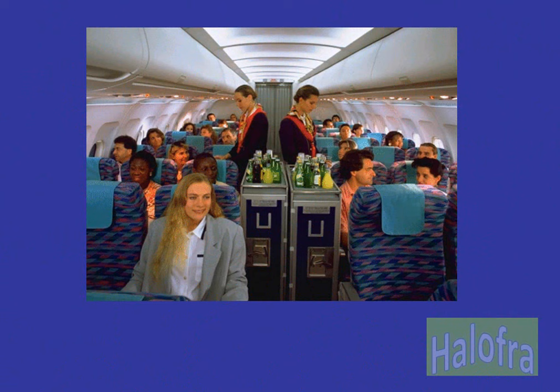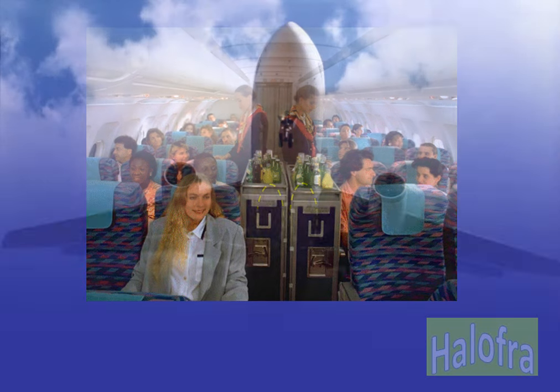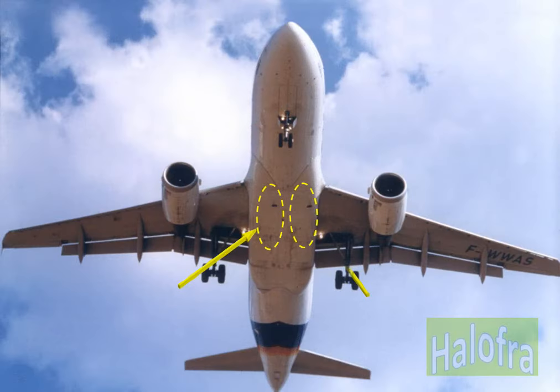Like the majority of the systems on the A320 family, the air conditioning system is fully automatic. We will begin our study of the system by first looking at the air conditioning packs. The A320 family is equipped with two air conditioning packs, located in the wing root area forward of the landing gear bay.